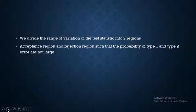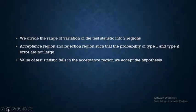We divide this range in such a way that the probabilities of the two types of error — type 1 and type 2 — are kept very small. If the value of the test statistic calculated from a sample falls in the acceptance region, we accept the hypothesis; if it falls in the rejection region, we reject the hypothesis.